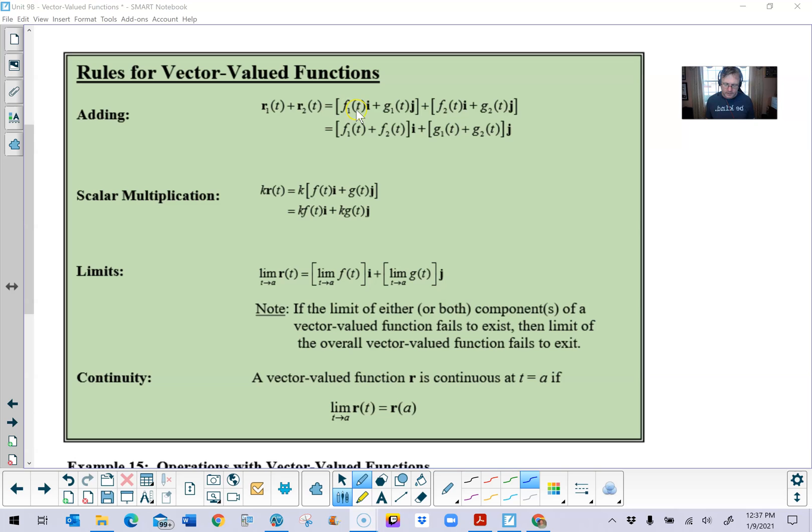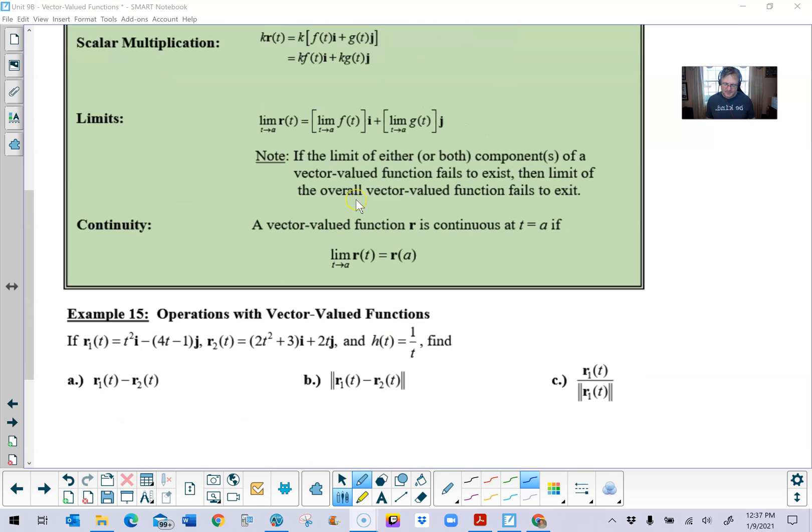And so you essentially take whatever function of t is in front of the i in both of your two vectors, and they just get added together. And then they still will reside in front of your unit vector i. Now keep in mind, you can also use your bracket notation and express your vector that way. It probably comes as no surprise that you would add the two values that come in front of the j and combine their like terms as well. Scalar multiplication works just as you would probably assume. You would just distribute your k into both pieces of the vector value function. With that, let's take a look at a few examples here.